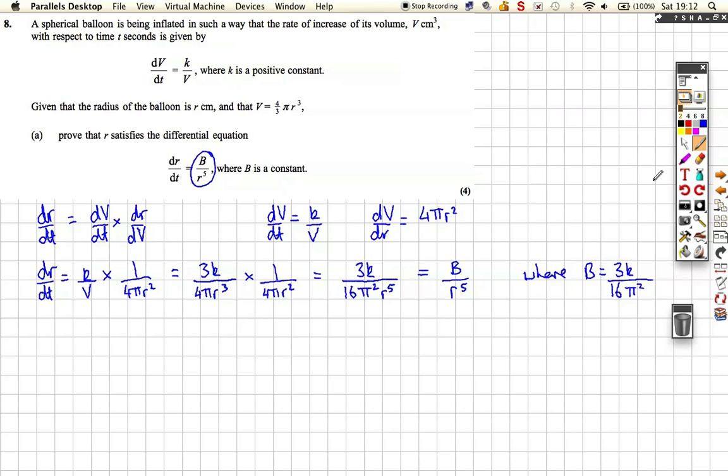So we can just say where b is equal to 3k over 16 pi squared. So we've actually proved what we want to do. Perfect. So that's 4 marks. That was a little bit tricky, but it was just an algebraic manipulation.